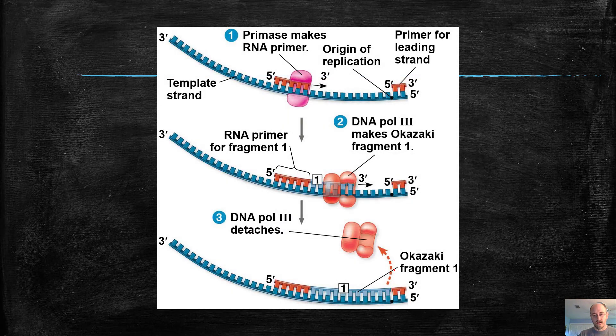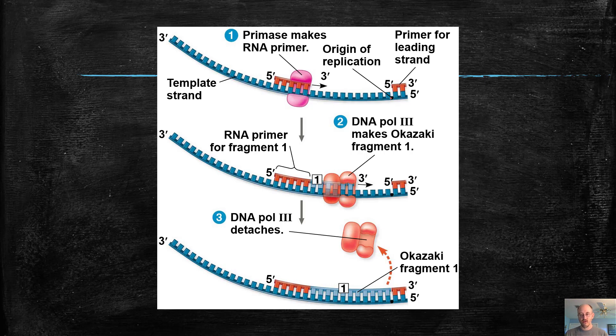So what happens is we have the origin of replication right here. So you don't have to pay attention to anything to the right of that. We have template strand has been exposed. We build a primer, just like with all DNA replication. So primase, which is an enzyme, comes in, builds a bit of a primer. DNA polymerase attaches, and it builds new DNA until it runs into the origin of replication right here. And then it stops.